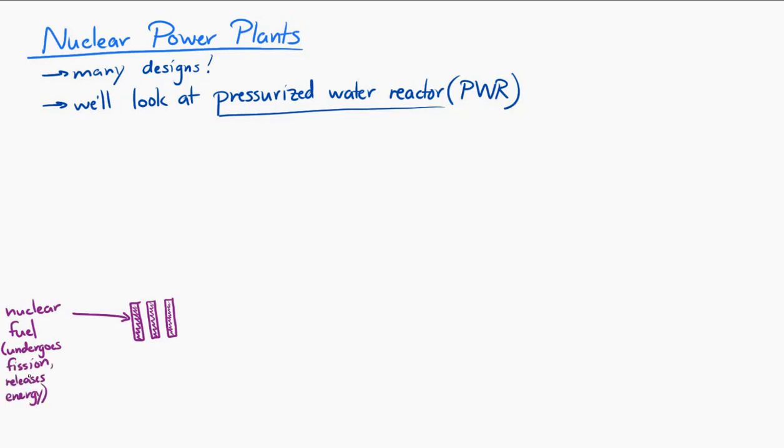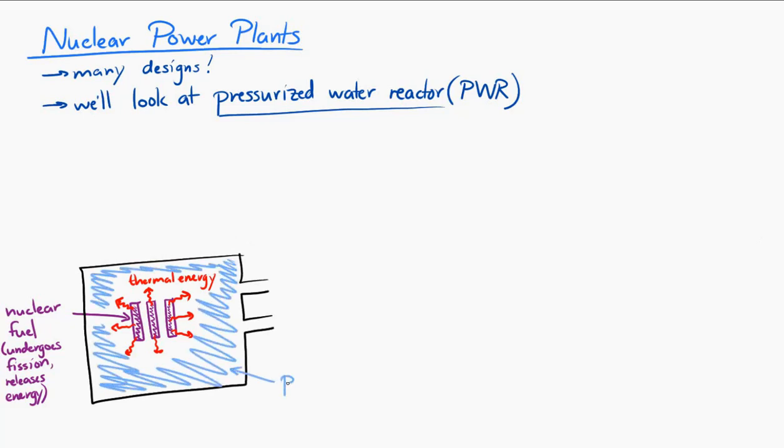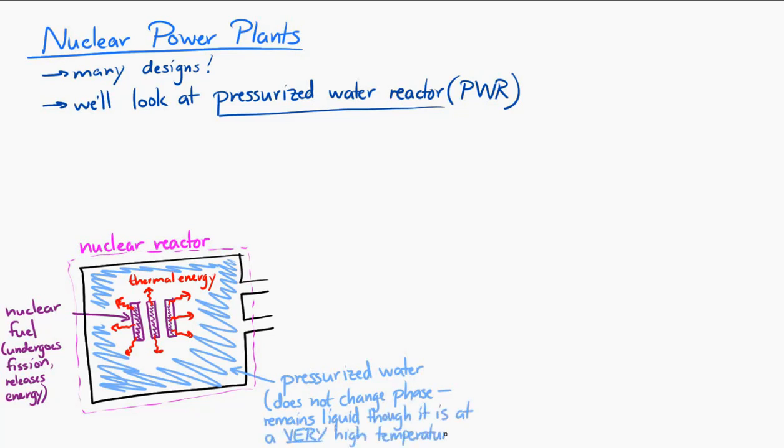That energy is transferred to the water surrounding the nuclear fuel. And the water is kept at a high pressure. It's pressurized water. And that's all contained within the reactor. So, the pressurized water is pressurized so that it will not change phase. It remains a liquid, even though it reaches very high temperatures.